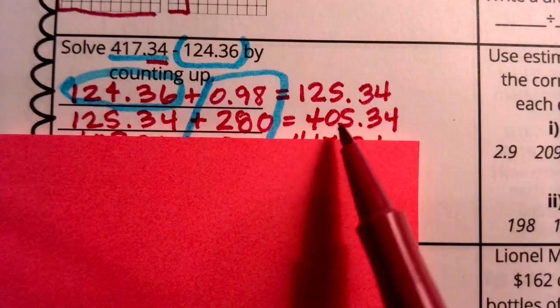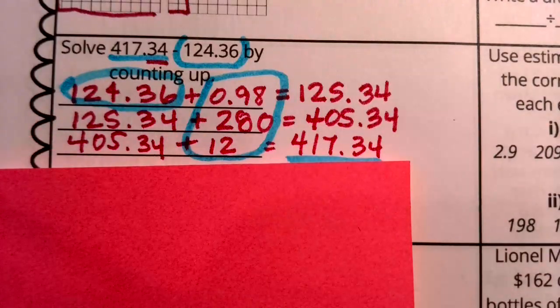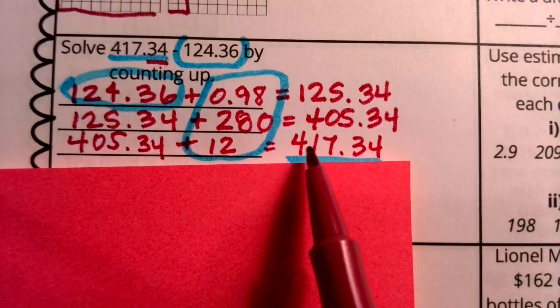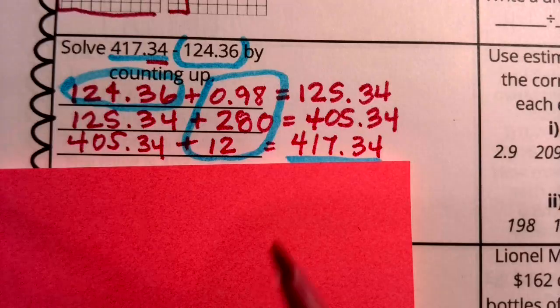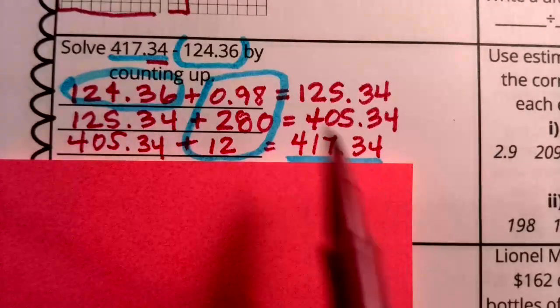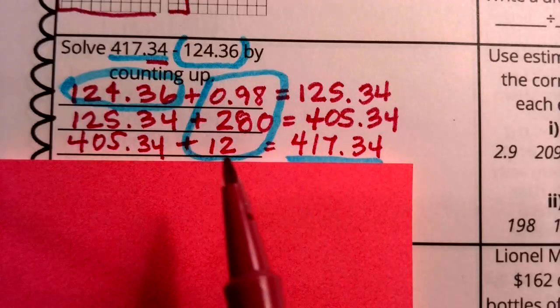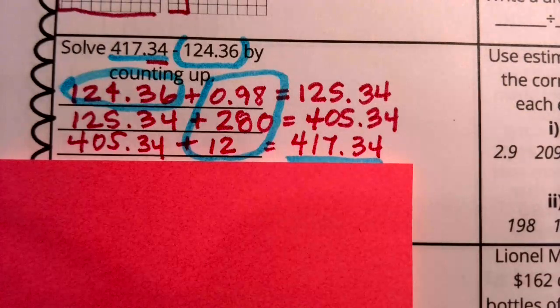but I still had a little bit to go from 405 to 417. I still needed to add 12 more. I added those 12 wholes and now I got to 417 and 34 hundredths. Now I got from, again, my starting point, to my destination, but these were all the ways that I got there.